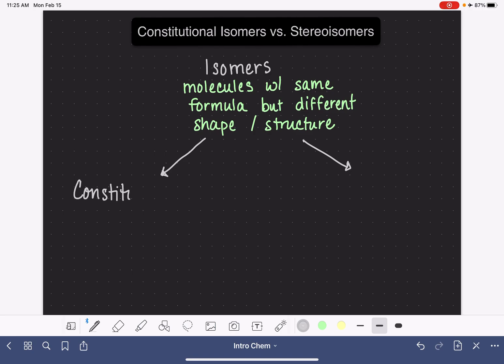Constitutional isomers have molecules with the same formula. That's just a general requirement. Constitutional isomers are molecules that have a different connection of atoms. Sometimes we refer to this as connectivity—different connection, different way in which the atoms are connected to each other.